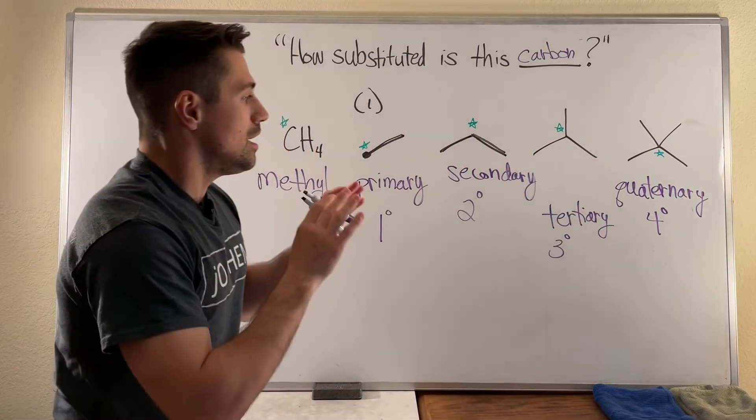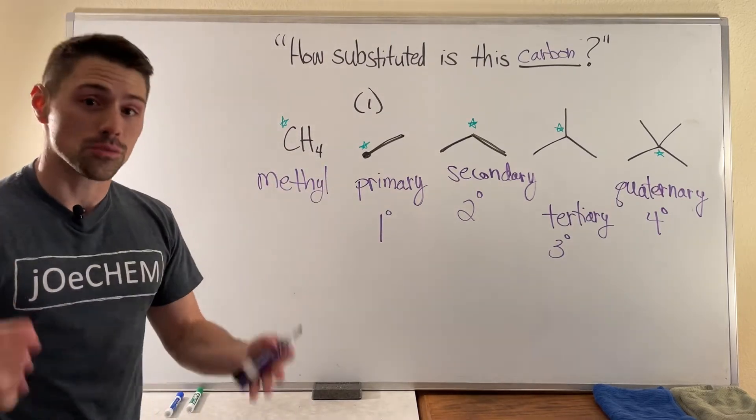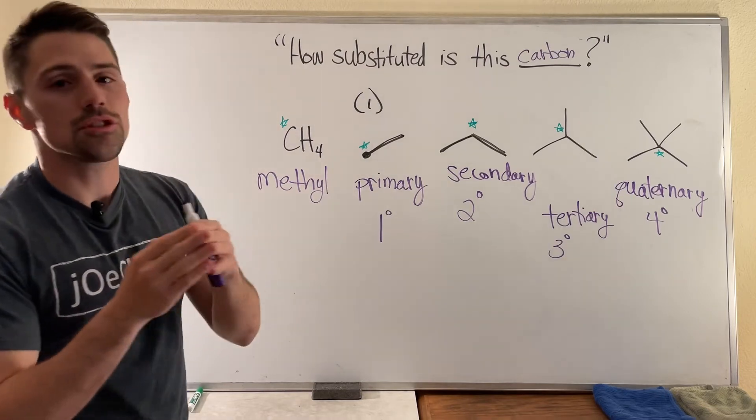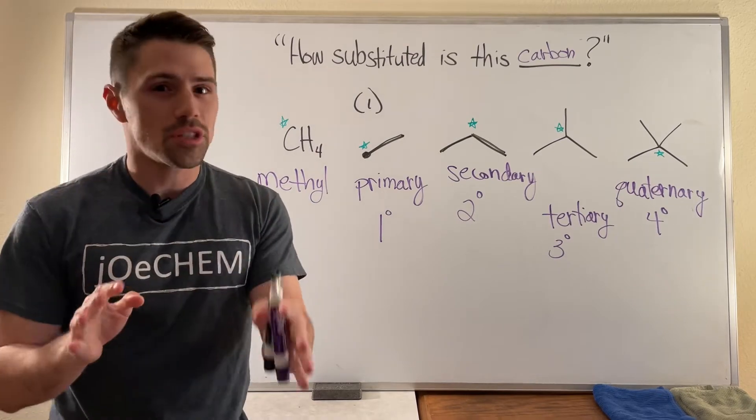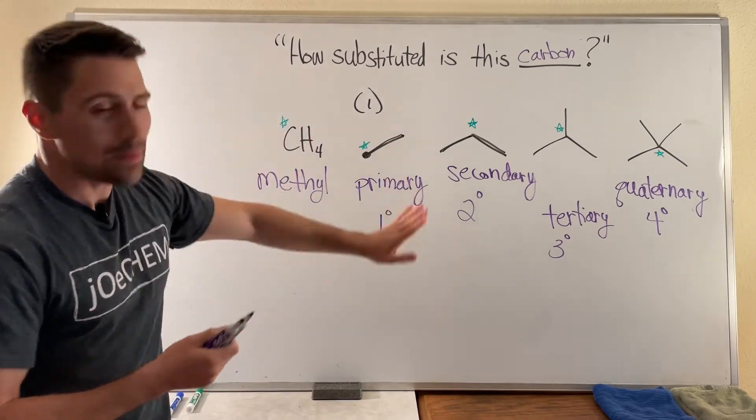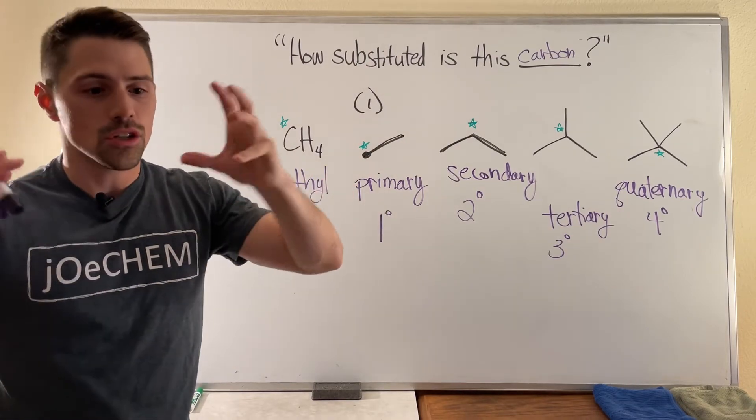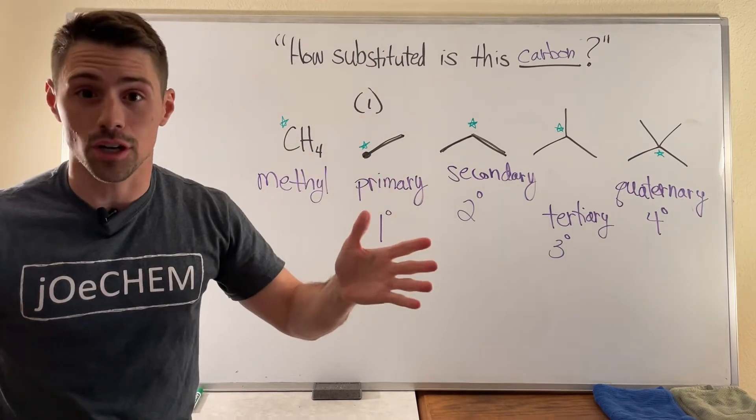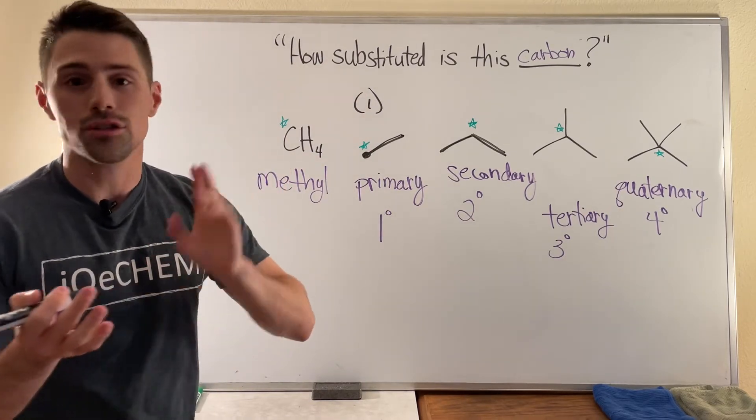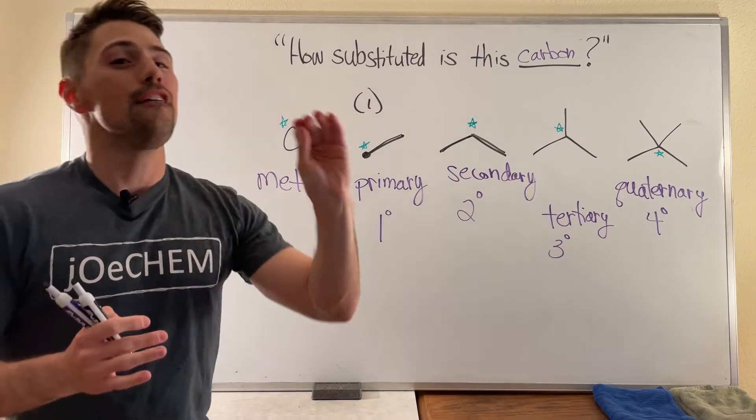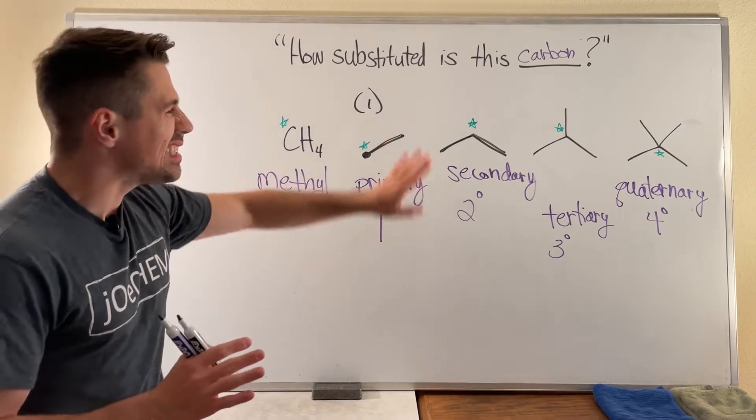You will be asked this question a shocking amount in your organic chemistry career. So it's one of those things where please just feel comfortable with this terminology, put in the few minutes to feel good about it. So what I want to do for the rest of the video is wipe this up, throw up a random structure, a bigger completely carbon hydrogen hydrocarbon structure, and I just want to go through and count the number of primary, secondary, tertiary, quaternary carbons in it. And then also wrap functional groups in at the end, but not too much longer in this video.